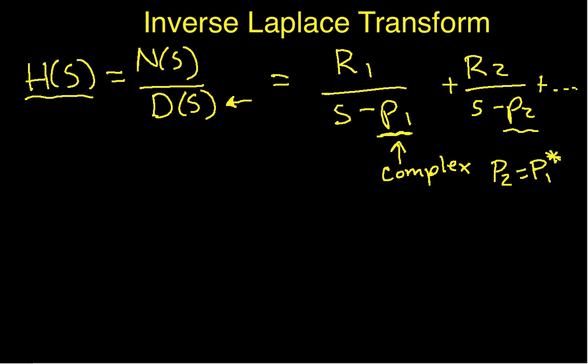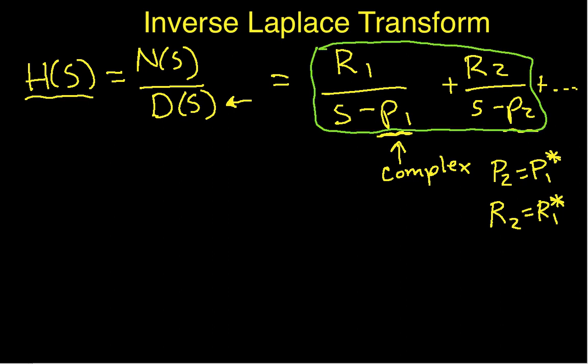You'll recall that the complex conjugate of p1 is obtained by changing the sign of the imaginary part. It also turns out that r2 is going to be the complex conjugate of r1. So when you're trying to do this inverse Laplace transform, you look for a pair where r1 is the complex conjugate of r2, and p2 is the complex conjugate of p1. If you find that, then you know that this pair of terms together is going to give you cosines and sines — a cosine and a sine — in the time function.